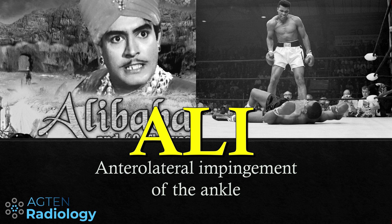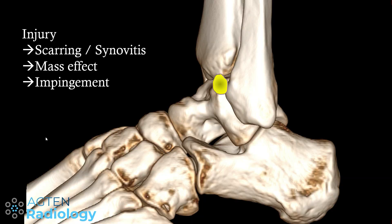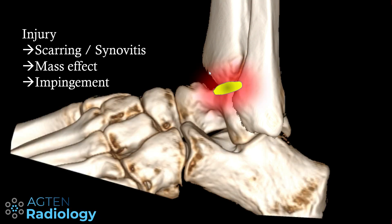So what is anterolateral ankle impingement? As with anterior ankle impingement, it's technically a clinical diagnosis. Patients have pain anterolaterally at the ankle joint and typically had some kind of injury — it can be months, weeks, or years ago. Then there is hypertrophic scarring or synovitis that leads to a mass effect or space-occupying lesion in the anterolateral gutter. This mass causes problems during dorsiflexion, getting impinged and causing discomfort, pain, and limited range of motion.